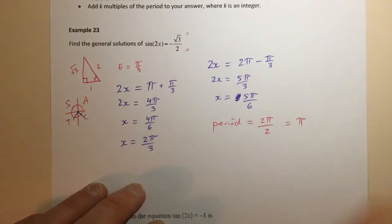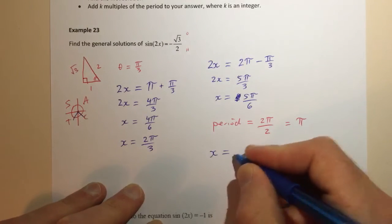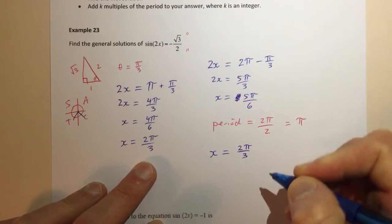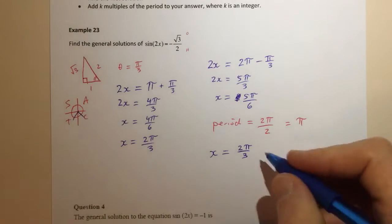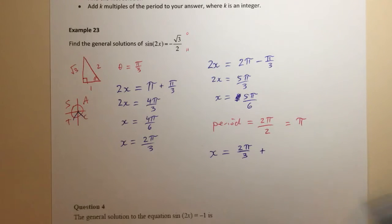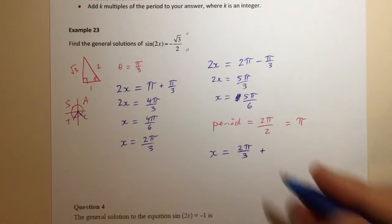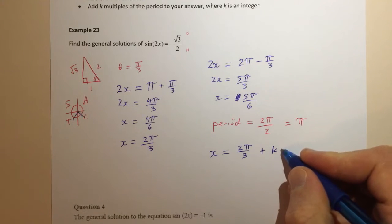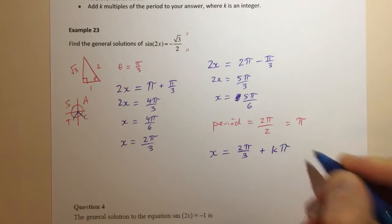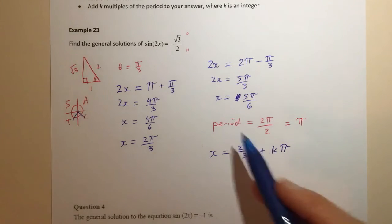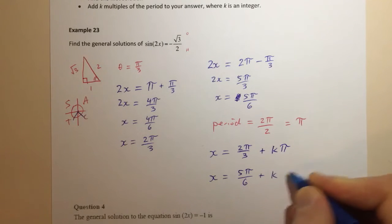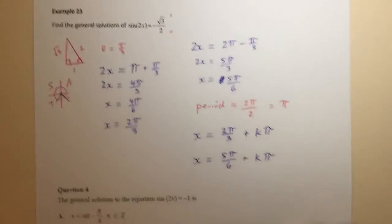The way that we write it is to say that x will equal, let's start with our first solution, 2π/3. So it's 2π/3 plus, now you can use any letter and you'll sometimes see other letters used, I like to use k but that's just kind of arbitrary, k times the period which is π. Or x will equal 5π/6 plus k times the period which is π.